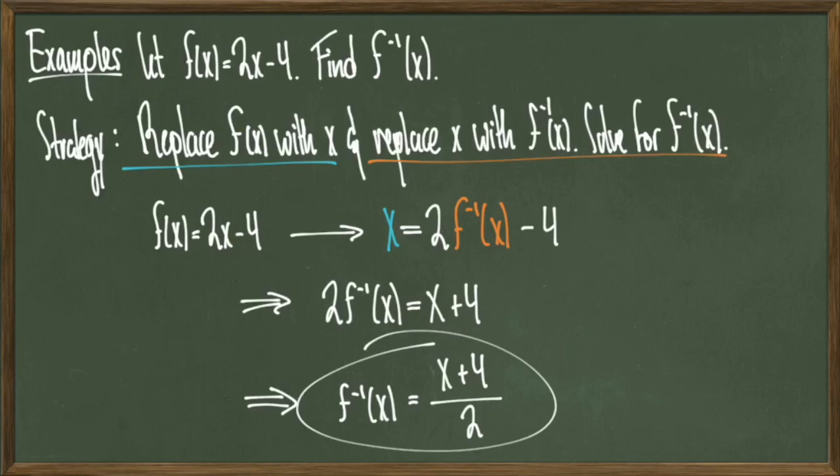So that's really all there is to finding the inverse of a function. You substitute f of x with x and x with f inverse of x, and then solve for f inverse of x. The original function f of x equals 2x minus 4 is a linear function, and those are always going to be 1 to 1.